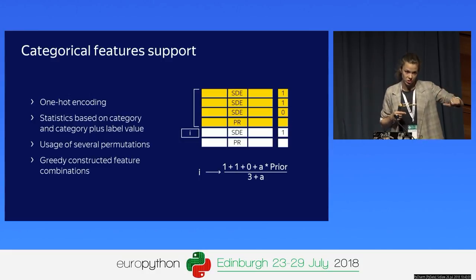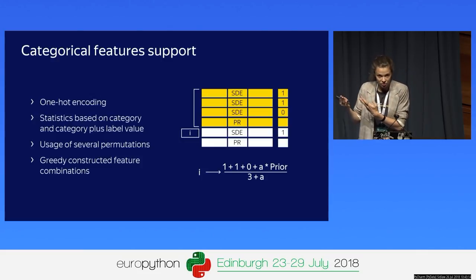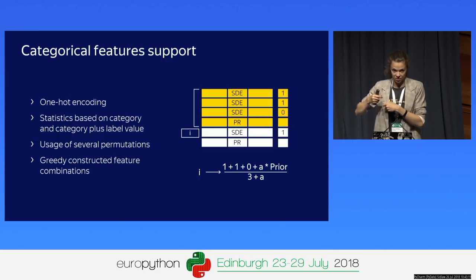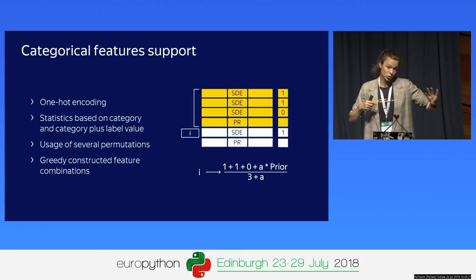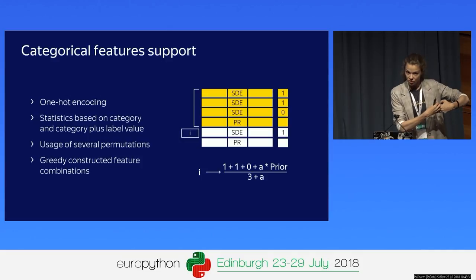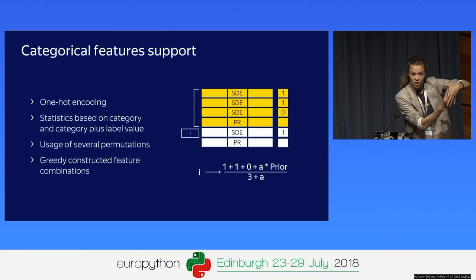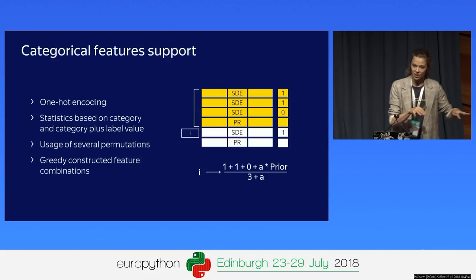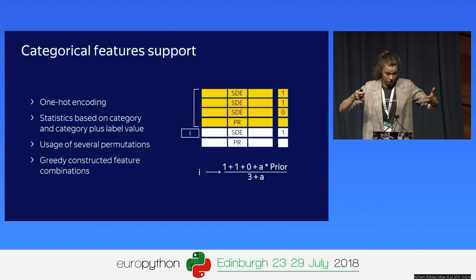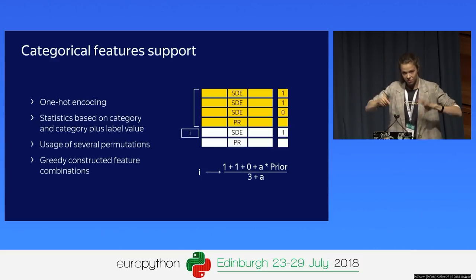We enumerate different priors and try different random permutations. But you cannot use two random permutations to train one model, because it leads to target leakage the same way as averaging over all the data. Instead, we train simultaneously four models. On each iteration when selecting tree structures, we flip a coin, select one of those models — each has its own permutation. We select the tree structure for that model, then give this tree structure to all four models, and calculate leaf values based on one more permutation. This gives a big boost in quality, and importantly you cannot do this during preprocessing — it must be done inside the library.